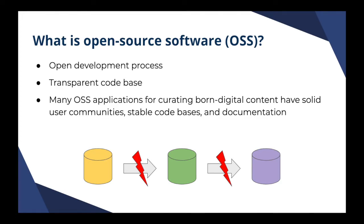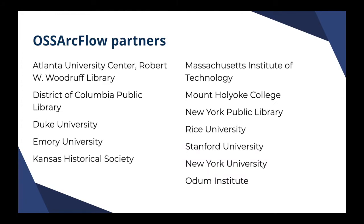This issue is discussed in greater detail in the guide to documenting born digital archival workflows. The 13 steps outlined here were identified through the workflow assessment and documentation process done in collaboration with the 12 OSS ArcFlow partners. These steps were the most common processes undertaken by all partners when archiving born digital content, though not all steps are undertaken by each institution. Each institution may also perform these steps in a different order, so they are not necessarily listed here in order of operation.